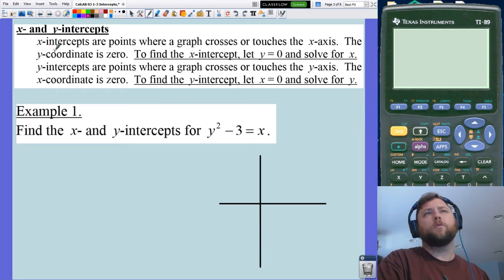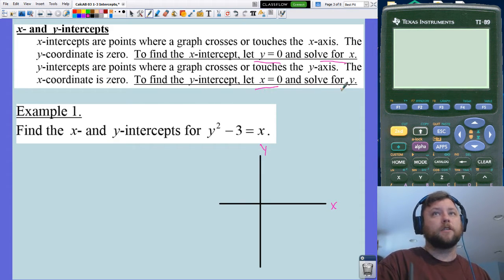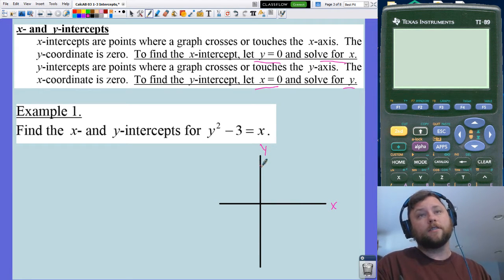First thing is x and y intercepts. X-intercepts happen when a graph crosses the x-axis. Y-intercepts happen when it crosses the y-axis. To find the x-intercept, you set y equal to 0 and solve for x. To find the y-intercept, you set x equal to 0 and solve for y. That's because on the x-axis all the y's are 0, and on the y-axis all the x's are 0.